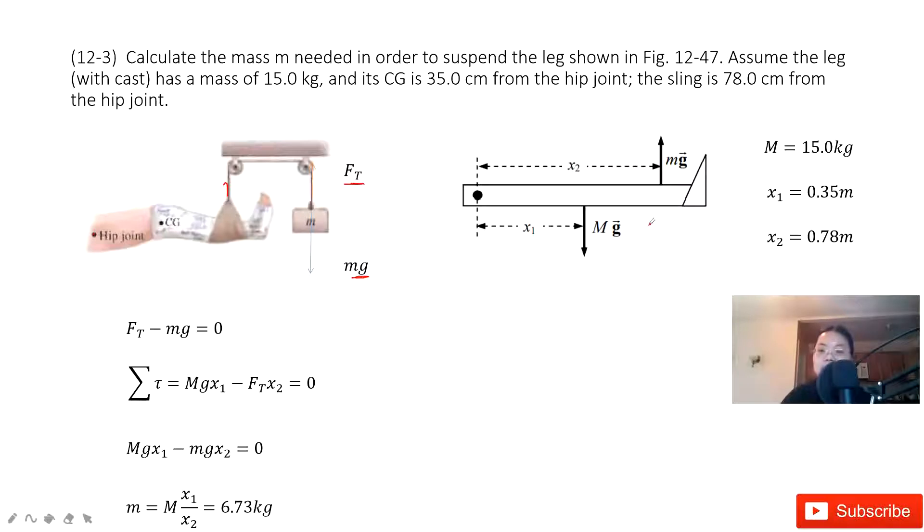Now you can see we know the capital M, we know x1, we know x2. Can you find this small m? Sure. We consider the net torque is zero to keep the object balanced.